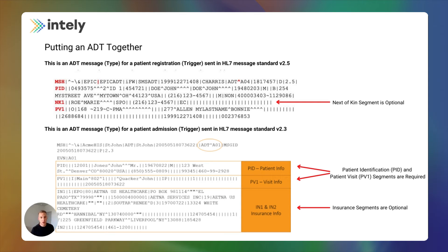If we pick apart these fields a little bit, this tells us about the patient. The PID segment — that's the patient identifier or identification segment — and the PV1 is the segment for patient visit details. You can see that between those two message types, both those segments are present, and they are always going to be required in the ADT message type.